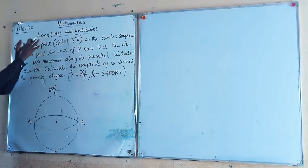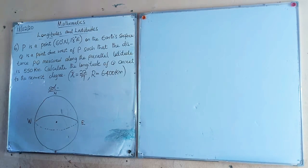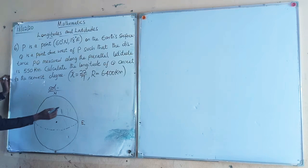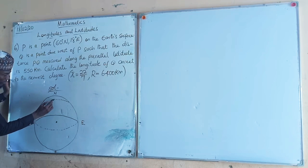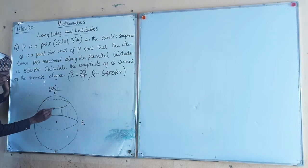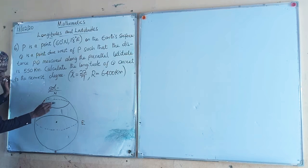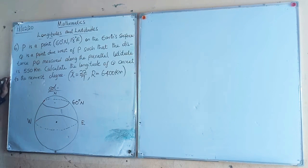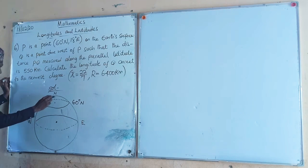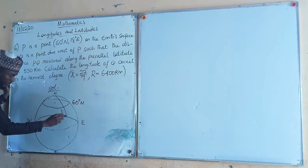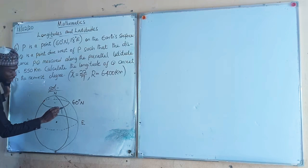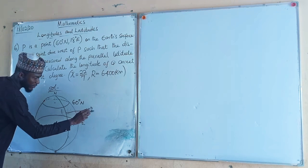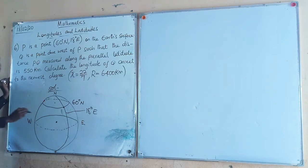Now let us plot all these points on our earth. The first point is at latitude 60 degrees north. My estimation will have something like this — it is just an estimation. 60 degrees north and longitude of 80 degrees east. This is the point of intersection between the longitude and latitude, which is point P.